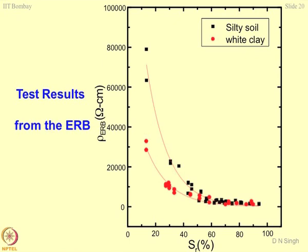The same trend is observed for thermal resistivity with respect to dry density and moisture content. When we talk about saturation, it accounts for volumetric moisture content as well. This means the resistivity obtained from the box test can be directly related to saturation, porosity, or volumetric moisture — more the saturation, less the resistivity.